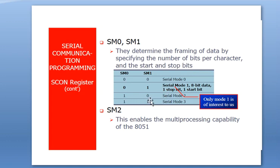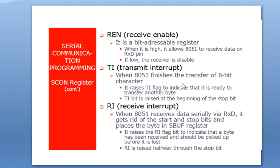Serial mode 2 is selected with SM0=1, SM1=0, and mode 3 with SM0=1, SM1=1. The SM2 bit is used when the microcontroller is used in multi-processing configurations — mostly not used otherwise. The REN bit is the receiver enable bit: when high, it allows the 8051 to receive data on the RXD pin. If REN is low, the receiver is disabled.